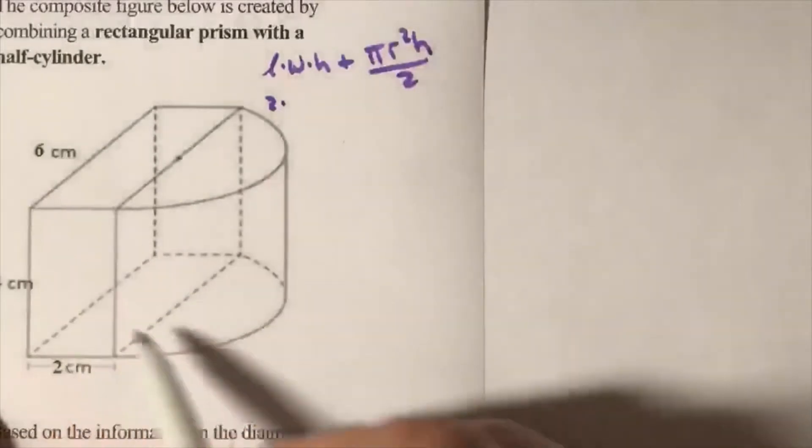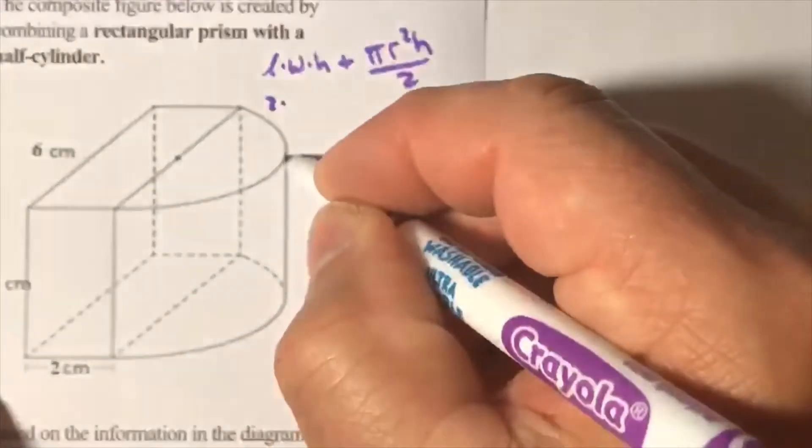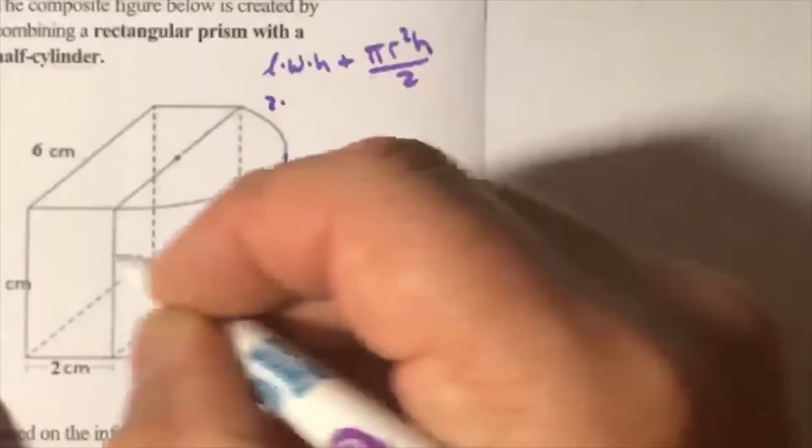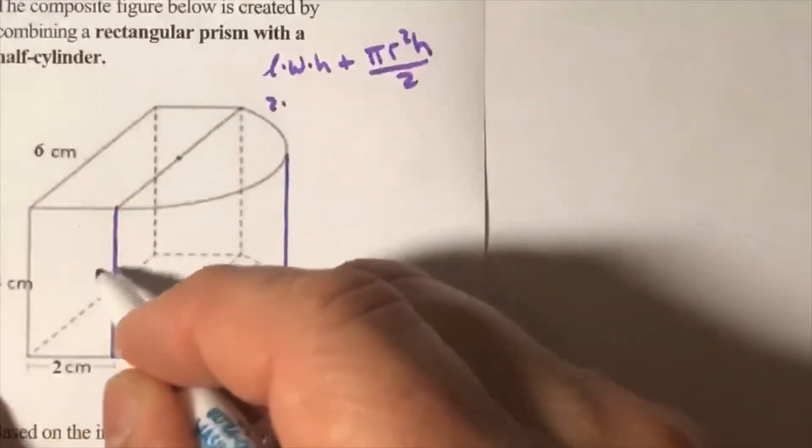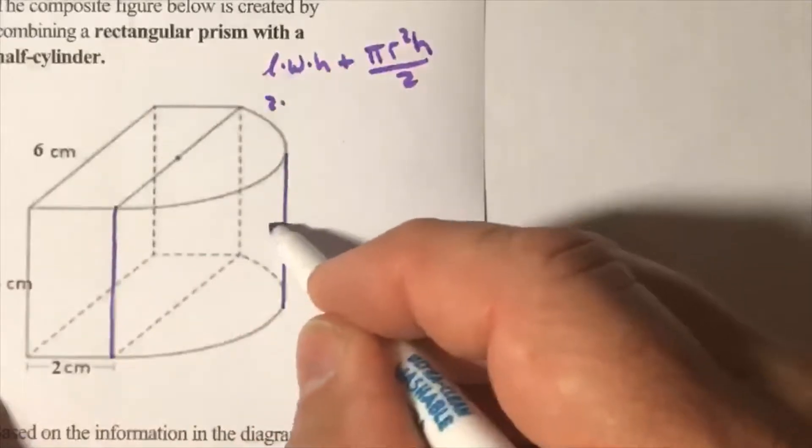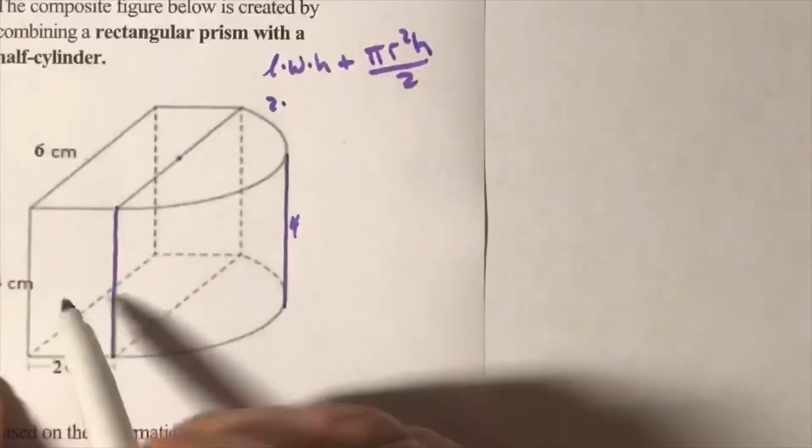Let's go ahead and keep the height. Let's make the height here - here's my height of the cylinder which is going to be here, which is 4. My height of the cylinder is 4, let's keep it that way.